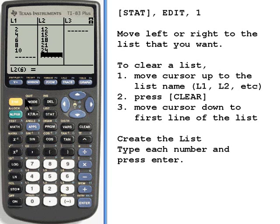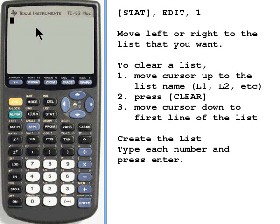Just press 2nd and mode, and that'll get you to your main screen. If you want to see the lists in the main screen, you can press 2nd, and then for list 1.